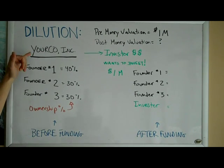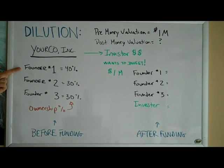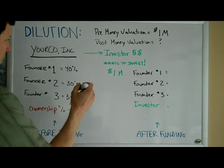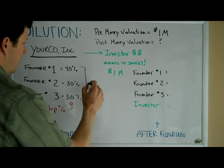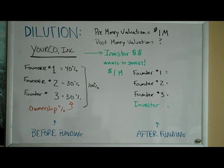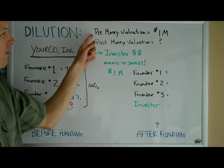In this example, your co — if you're a founder — these are the ownership percentages inside of your company the day before they raise funding. Founder number one owns forty percent, founder number two owns thirty percent, founder number three owns thirty percent. You'll notice that these numbers add up to one hundred percent of the company because they haven't taken on investment yet. Remember, that's before funding.